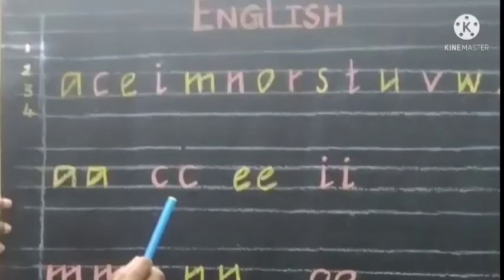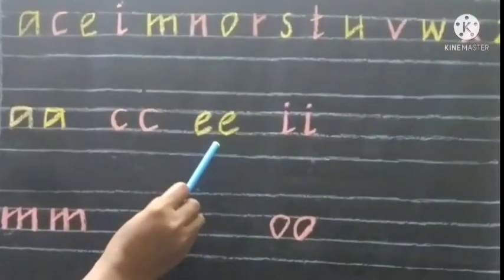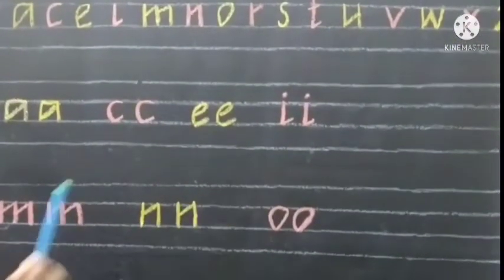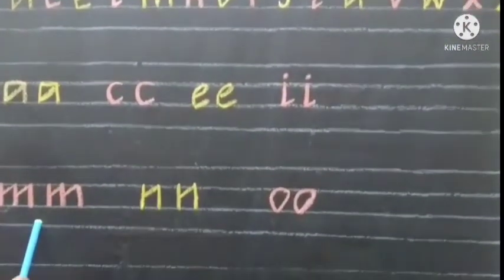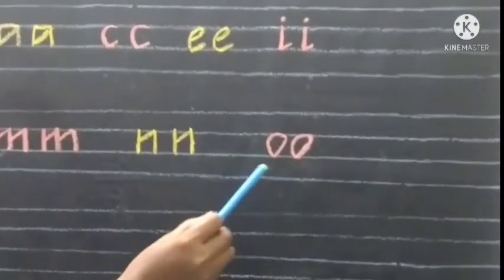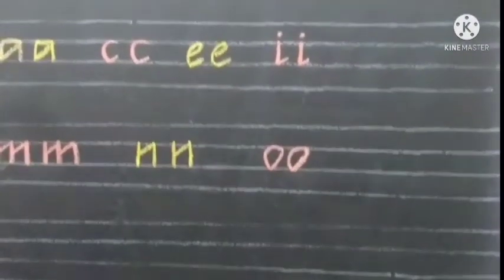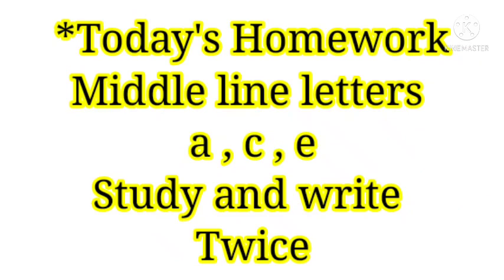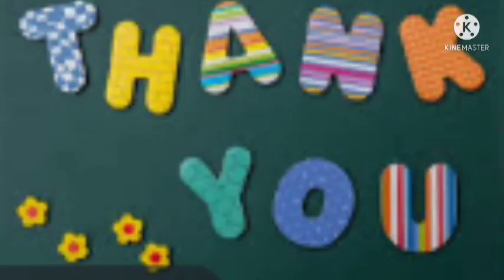Children, now read from the beginning: A, C, E, I, M, N, O. I hope you have understood. Today's homework: middle line letters A, C, E — study and write twice. Thank you children. We will meet in the next class. Bye bye.